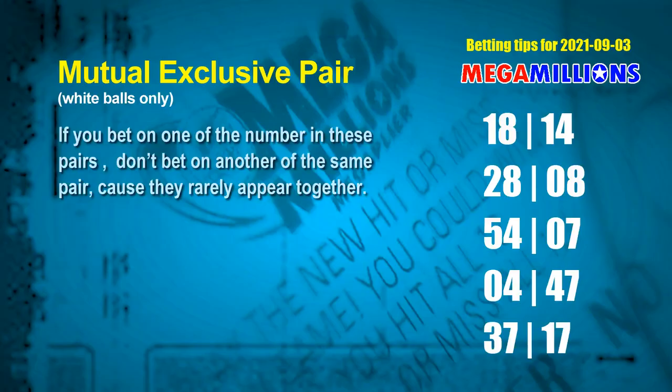Besides these best numbers, you can pick numbers through the following units digit rule yourself. Here are some tips to increase your hit odds. First, mutual exclusive pairs: these numbers both match the following ones rule, but according to hundreds of results they rarely appear together. If you bet on one, don't bet on the other in the same pair. The white ball mutual exclusive pairs are: 18 & 14, 28 & 08, 54 & 07, 04 & 47, and 37 & 17.